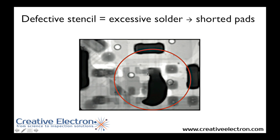Defective stencils would cause excessive solder to be deposited — exactly the opposite problem — where too much solder is deposited, which then causes shorted pads. This is another SMD component that had three pads individually windowed in the stencil; the fingers were actually broken, which caused this large amount of solder to be deposited, creating a short between the pads on this component.